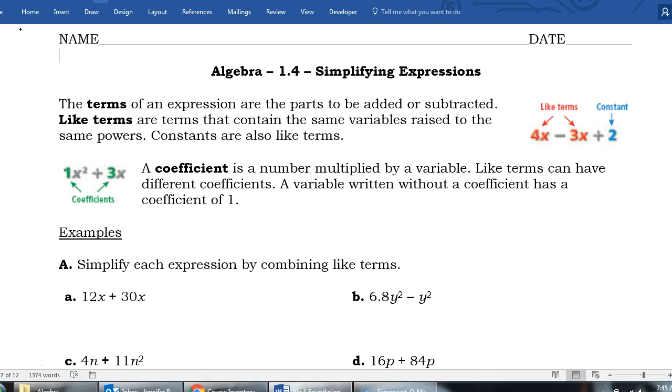The number in front of the variable, we call that the coefficient. If a variable has no written coefficient, there's always a coefficient, but I call that the invisible one. So if we just had an x plus three, there is an invisible one here whenever there's no value there.